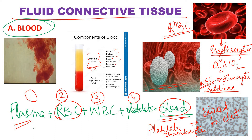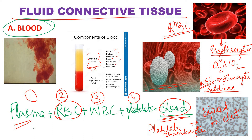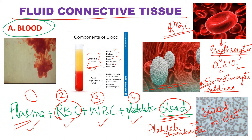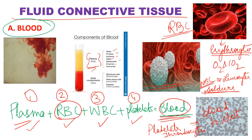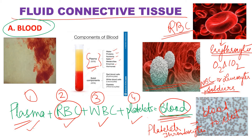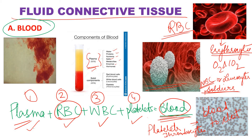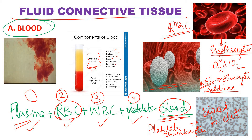Once again — blood is the liquid connective tissue. It consists of plasma, RBC, WBC, and platelets. When these four things combine, then only we get blood. Why is blood red in color? Because of the presence of red blood cells, which are red in color — and that is why blood is red in color.